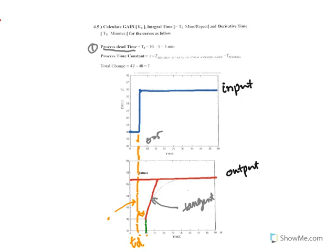TD equals 5 minutes. You draw a straight line down to the time axis, and also take a line to the time axis from the tangent line of the process reaction curve. The difference between these two lines equals the dead time. The dead time measures how much delay there is between the start of the input change and the change in the output.